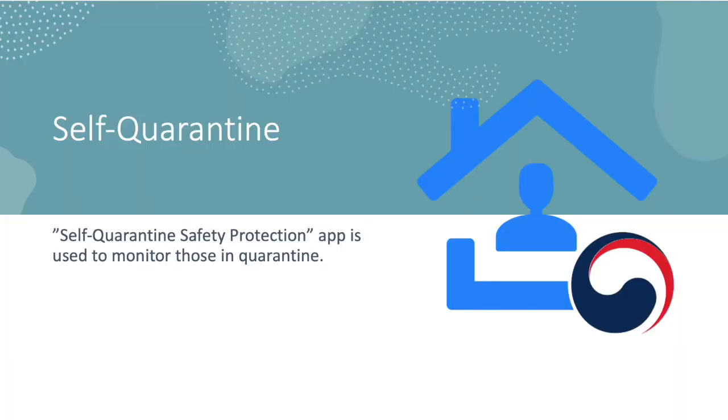For those who have been in close contact with a confirmed patient, which is having been within two meters with a confirmed patient or having been in the same room where the confirmed patient has coughed or just come from overseas, they are subject to a mandatory two-week self-quarantine. To monitor those in quarantine, an app called Self-Quarantine Safety Protection is utilized.